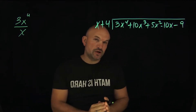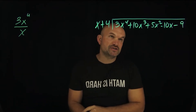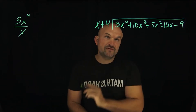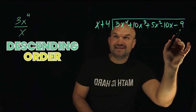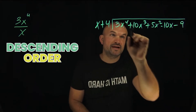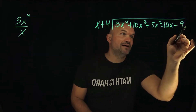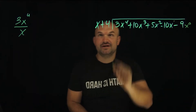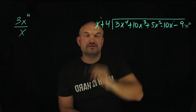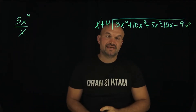When doing long division, a couple things we need to understand. First, we want to make sure we have everything in descending order — x to the 4th, x cubed, x squared, x to the 1st, and the constant, which is technically x to the 0. Always have things in descending order.